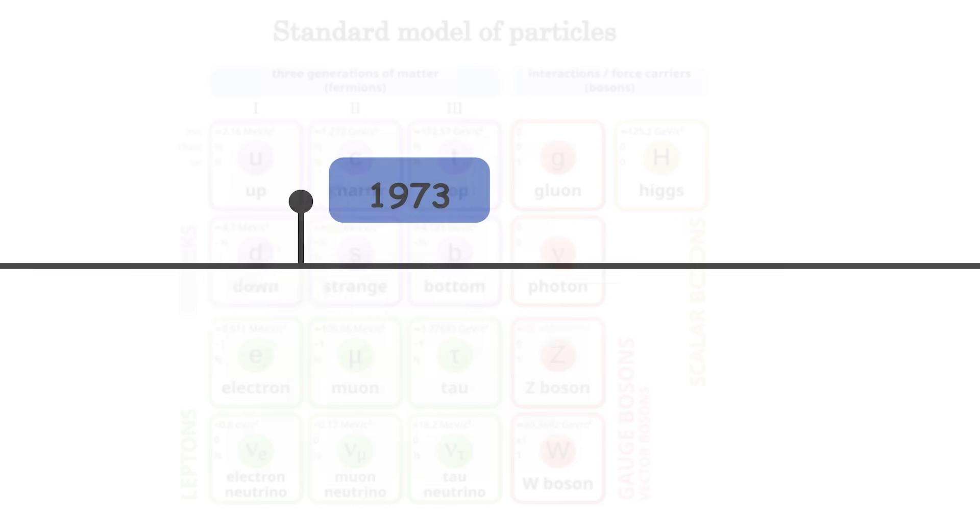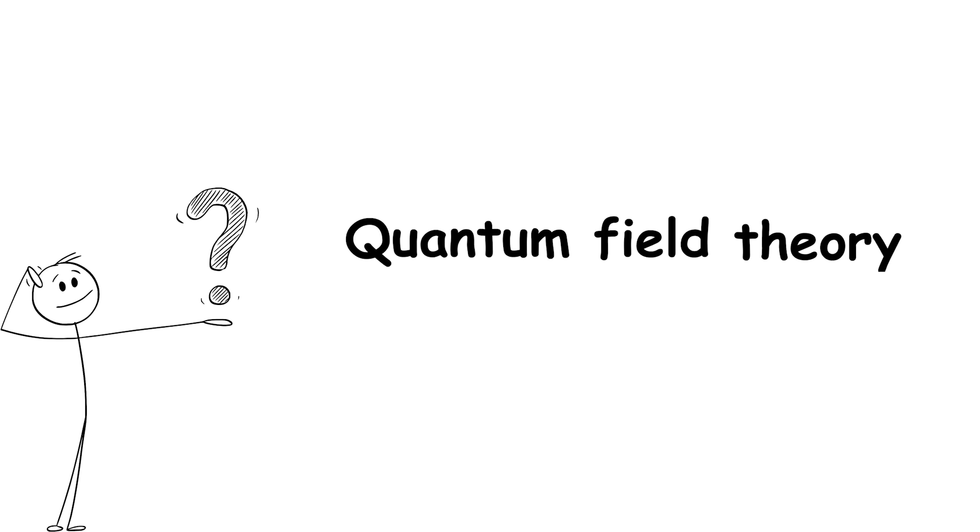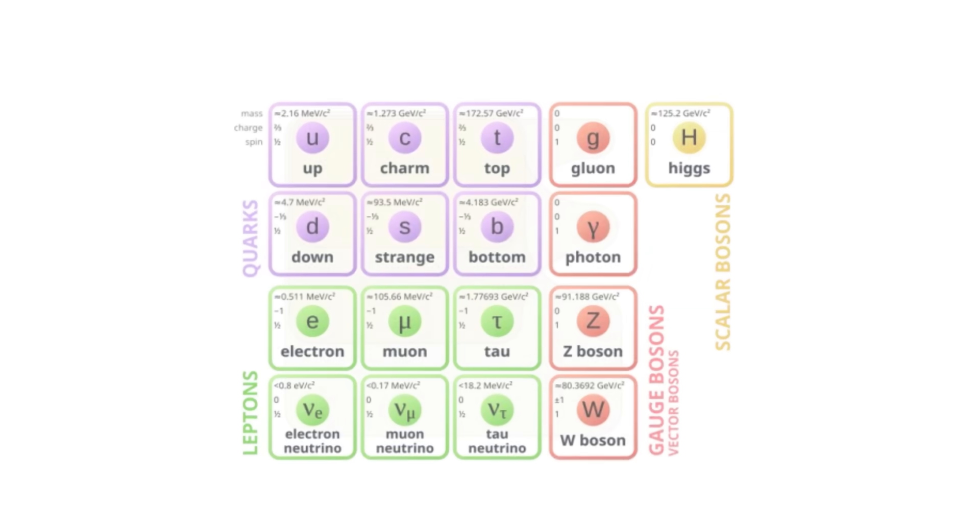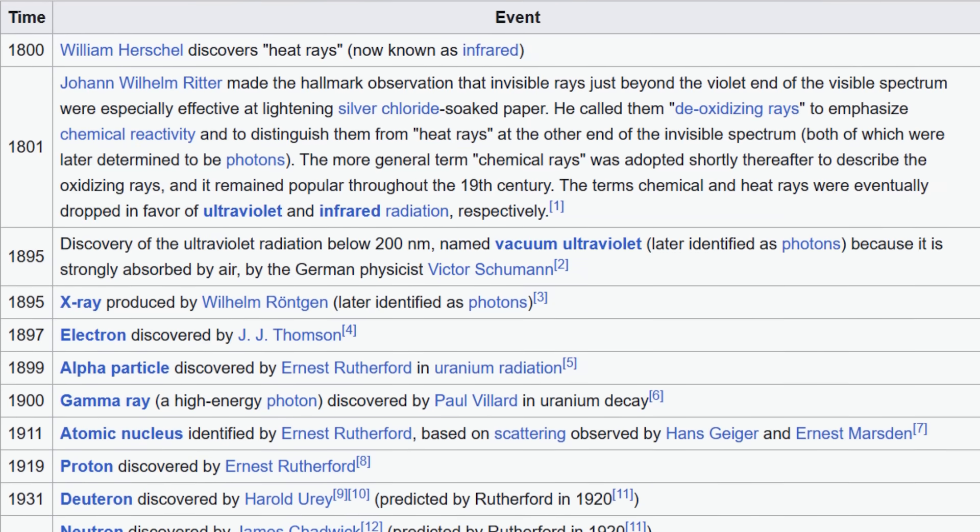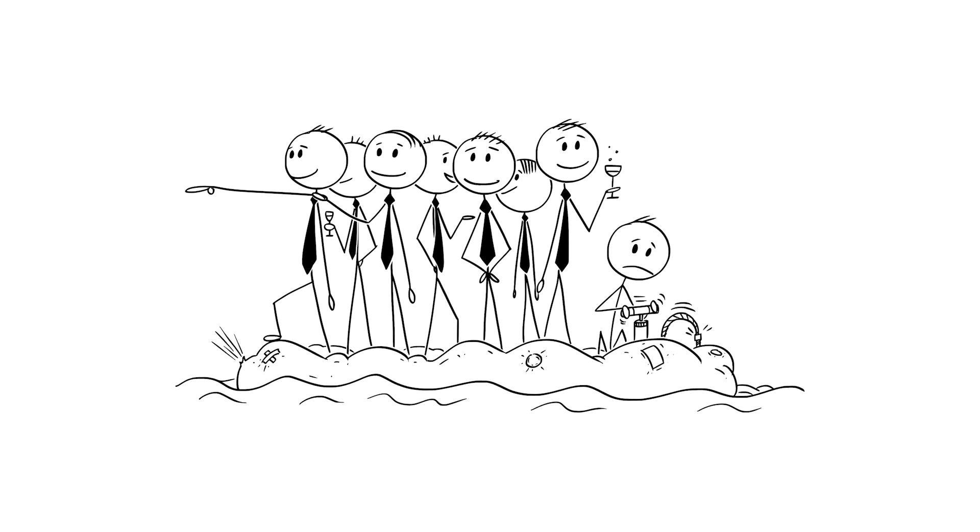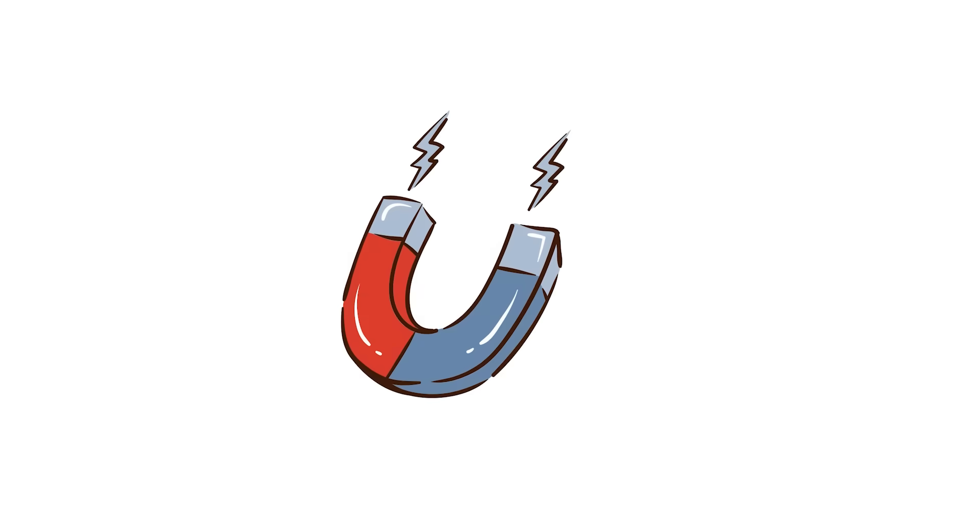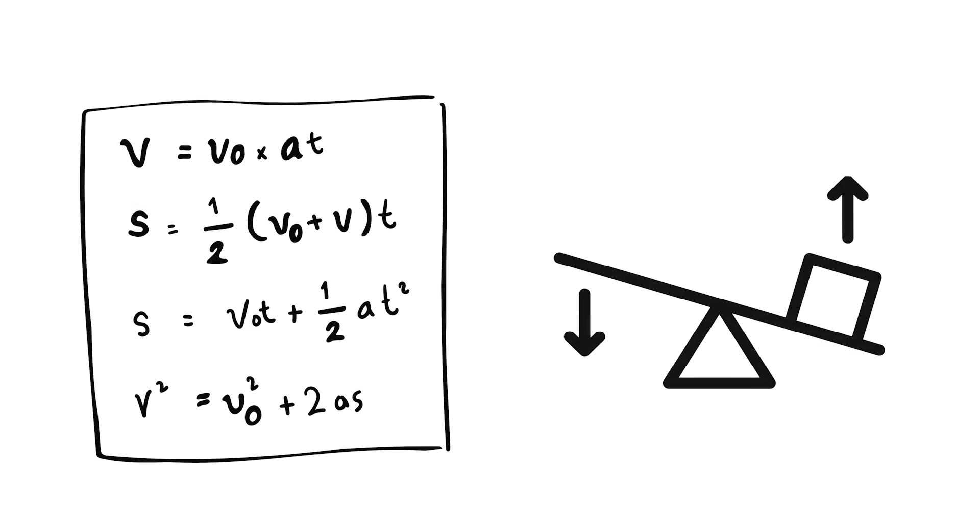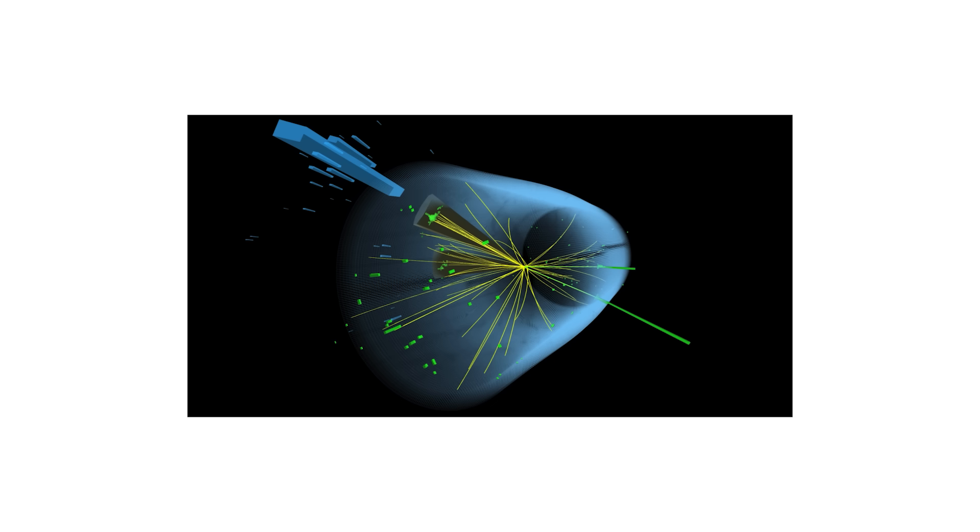1973: Standard Model of Particles. The Standard Model of Particles is a quantum field theory that describes the behavior of elementary particles. The standard model was developed over several decades with the participation of many scientists. The model describes subatomic particles and their fundamental interactions—electromagnetic, weak, and strong—forming the basis of modern particle physics. It explains experimentally observed phenomena and even predicts new particles, such as the Higgs boson.